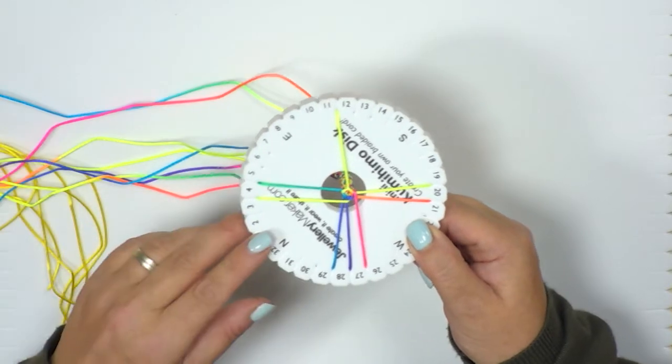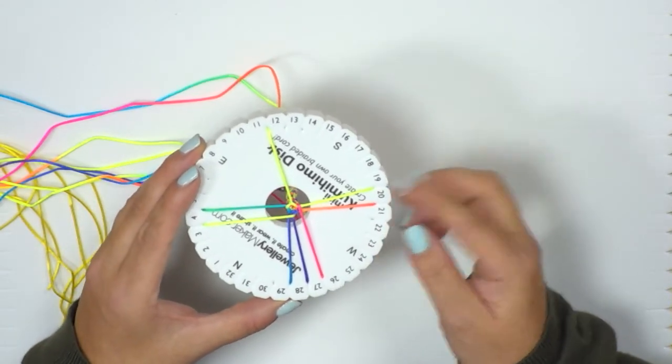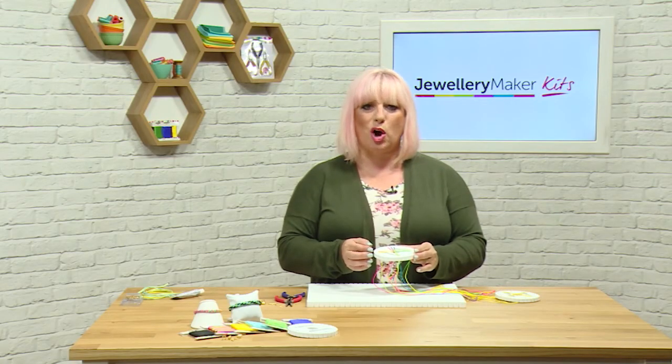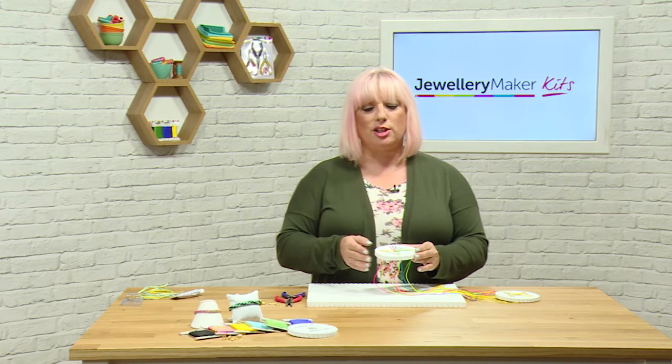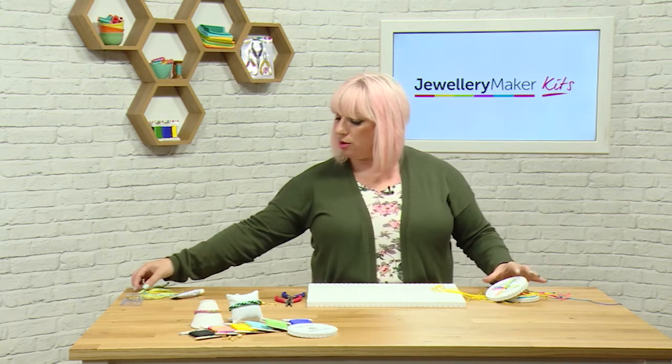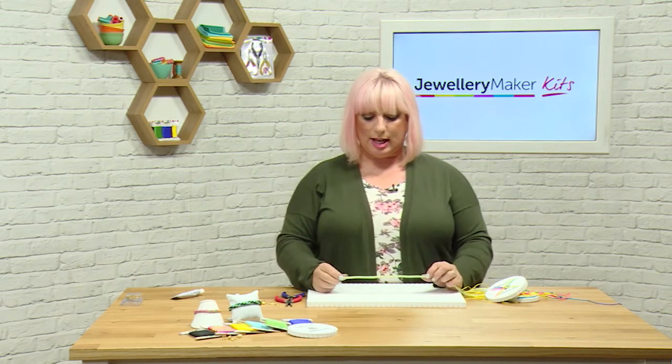So once you've got your desired length, so with your kumihimo you're looking for about, for a seven and a half inch bracelet, you're looking for about six and a half to seven inches of kumihimo because you can actually, with your clasps, it's going to add on that extra length. So I'm just going to pop that one down to the side and show you one that I've prepared here which has now got my desired length.